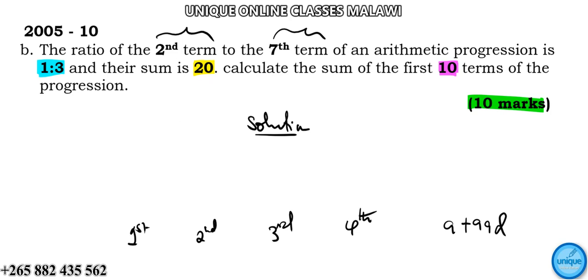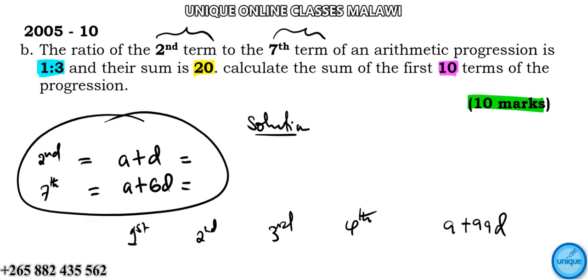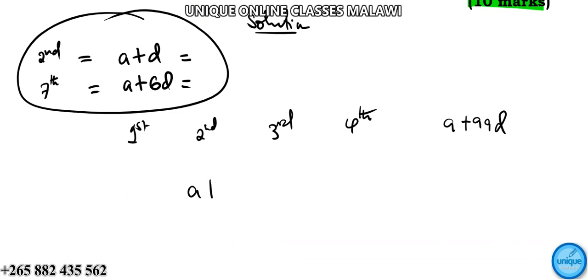Now let's go back to this problem. We are going to apply this. The second term in the AP is 'a plus d', and the seventh term is 'a plus 6d'. What the question says is that the ratio of the second term to the seventh term is 1 to 3. So we write: (a + d) divided by (a + 6d) equals 1 to 3.